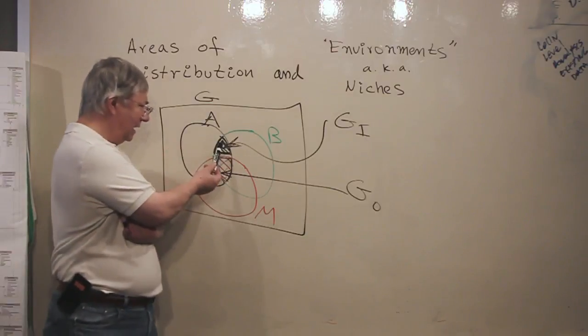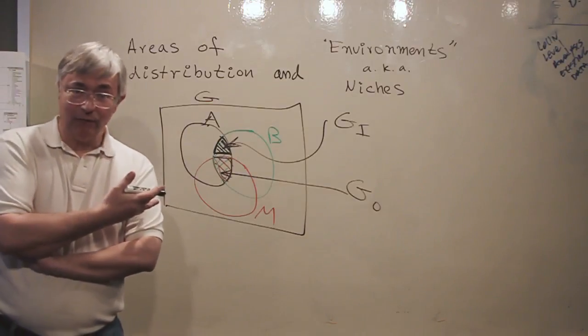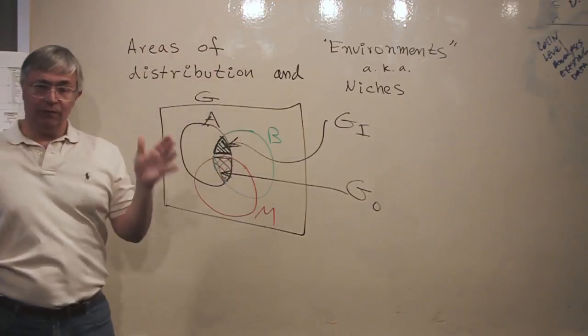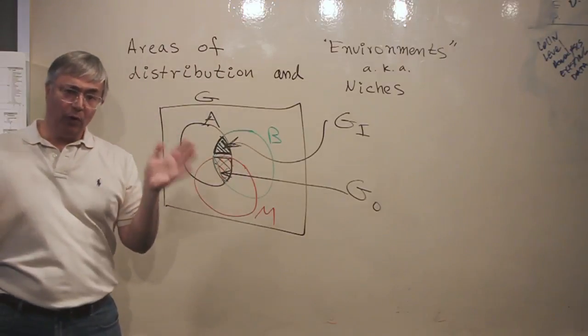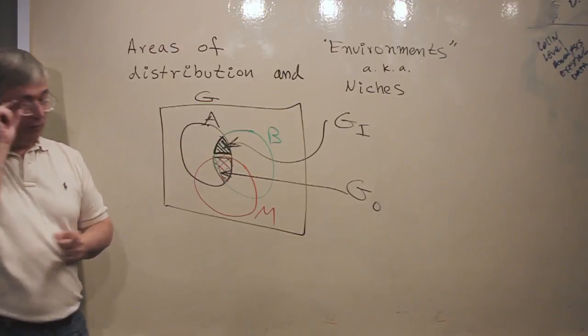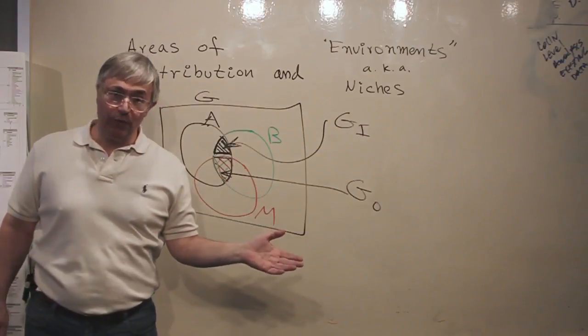So when we go back to our first question, first question to remember is how do we model areas of distribution? First thing, you have to be clear about whether you are modeling this one, or this one, or perhaps you are modeling both of them.